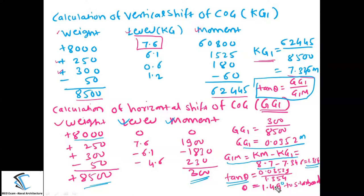We can verify our assumption: we assumed KM is constant, which is valid for angles less than 15 degrees. Since theta = 1.49 degrees is obviously less than 15 degrees, our assumption is correct. Always mention the direction — 1.49 degrees to starboard. Without mentioning the direction, the answer has no meaning.